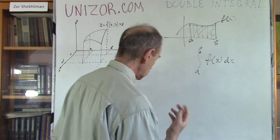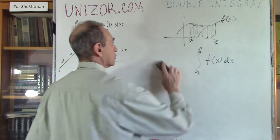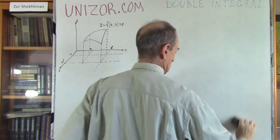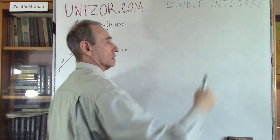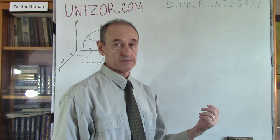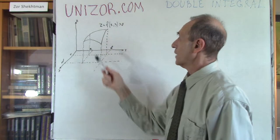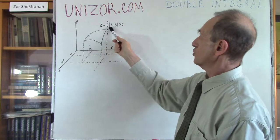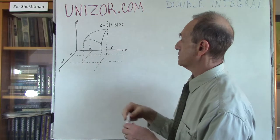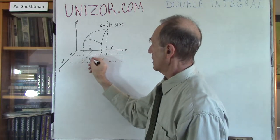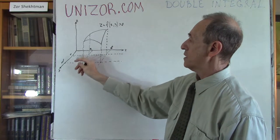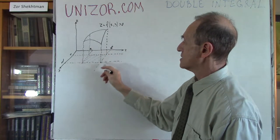I would like to expand this picture to a three-dimensional case. In the two-dimensional case, we have a function of one argument and the area under its graph. In the three-dimensional case, we have a function of two arguments — f(x, y) — defined for x between a and b, and for y between c and d, so within this rectangle.